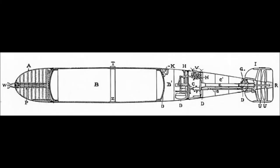At the front of the torpedo, there is a warhead full of gun cotton that explodes upon contact.